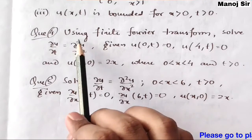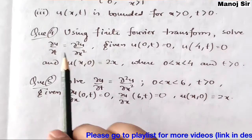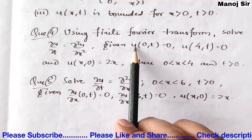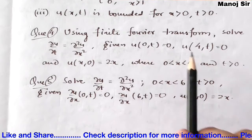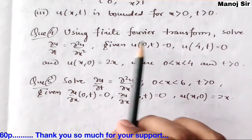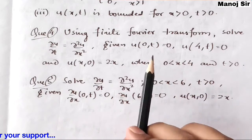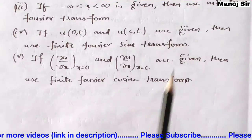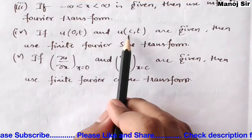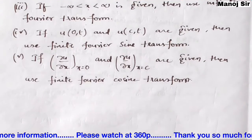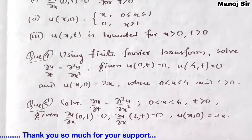For the fourth problem, it is already defined as using finite Fourier transform. Here two conditions are given: u is a function of x and t, the value of u is given at x = 0 and at x = C, with x ranging from 0 to C (finite limit). Since u is given at both x = 0 and x = C, we use the finite Fourier sine transform.